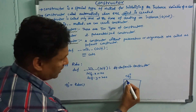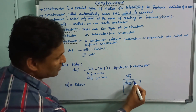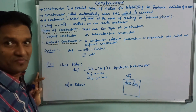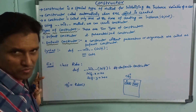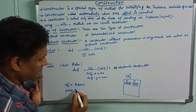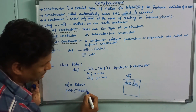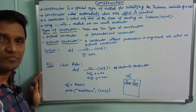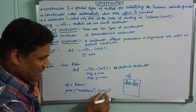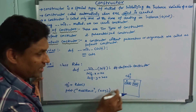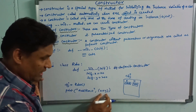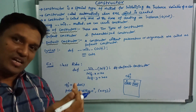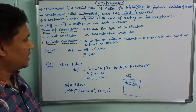When the object is created, the constructor is called automatically. x is 100 and y is 200. We add x and y and print the result. Addition is equal to x plus y. So x plus y is 300. We can print: addition equal to 300. This is how we implement the default constructor in Python.